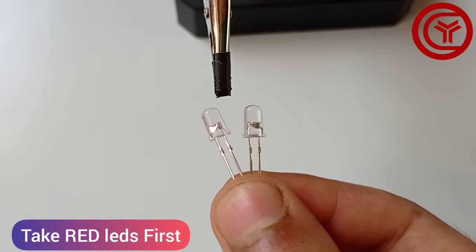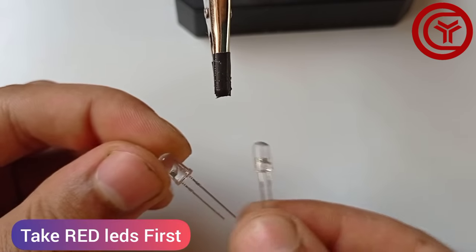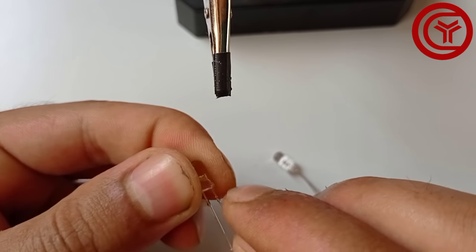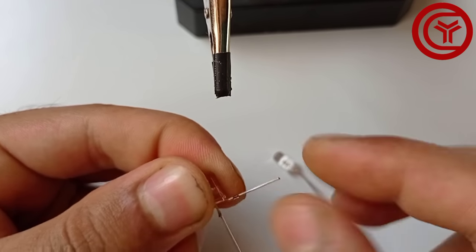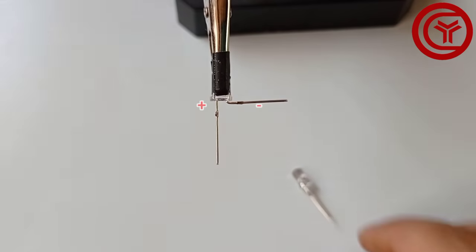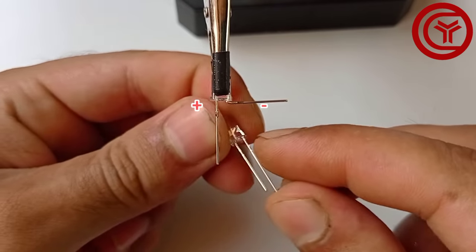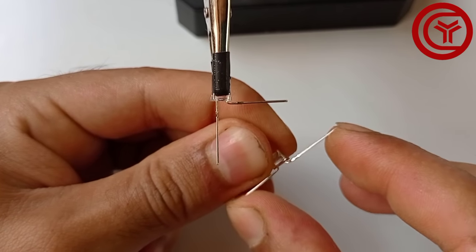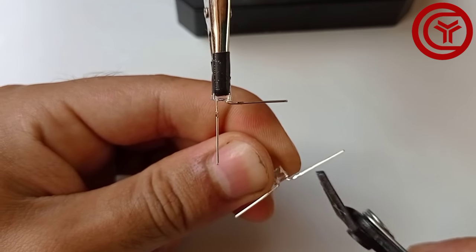Now first of all take red LED and bend negative leg. Take another red LED and bend the legs. Cut the excess of legs.